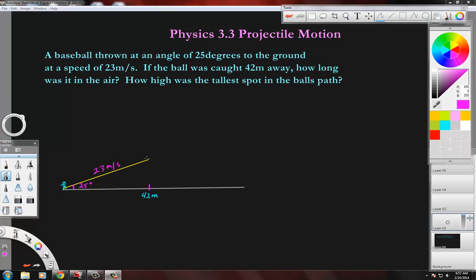With this problem, we know the speed of the ball. The actual path of the ball will look something more like a parabolic arc, and somebody catches it 42 meters away. I'm going to look at this triangle that's formed right here, and I want to look at it in terms of its velocity.